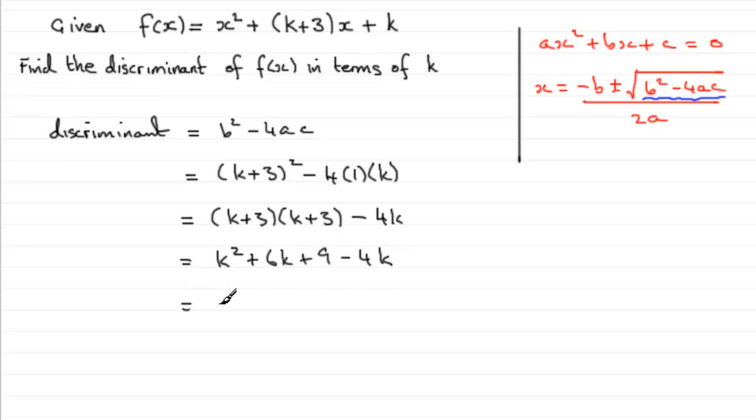Clean this up. We've got k² + 6k - 4k is 2k, and then plus 9. So that's our discriminant.